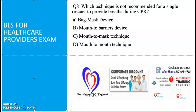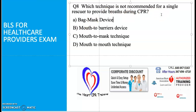Question eight: which technique is not recommended for a single rescuer to provide breaths during CPR? A: bag-mask device. B: mouth-to-barrier device. C: mouth-to-mask technique. D: mouth-to-mouth technique. The correct answer is A — the bag-mask device. To use the bag-mask device, also called the Ambu bag, you need two rescuers. One performs 30 compressions while the other is positioned at the head to deliver the two breaths using the Ambu bag.